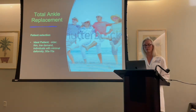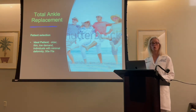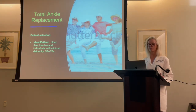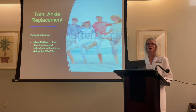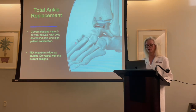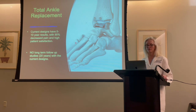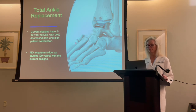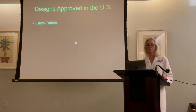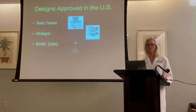Total ankle replacement — who is the ideal patient? Someone who is older, in their 50s to 70s, thin, low demand — meaning most of their activities are walking or low impact — and with minimal deformity of the ankle joint. Current designs in total ankle replacement now have studies showing good 5 to 10 year results. Designs approved in the U.S. include the Salto Talaris, Integra, STAR, Zimmer, and InBone.